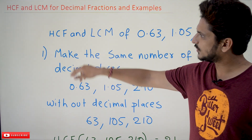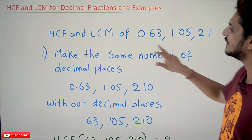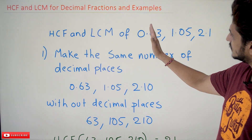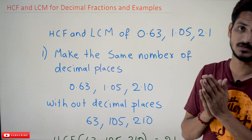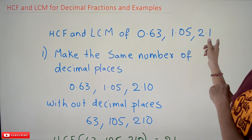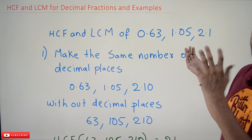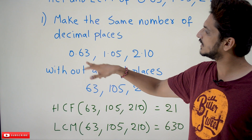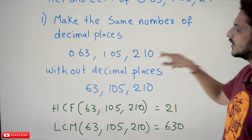The first thing you have to do when decimal fractions are given is make the same number of decimal places — that is, after the dot, make an equal number of decimal places. We have two places, two places, and one place. Add one zero — nothing will happen, the value is not going to change. So we make them equal: 0.63, 1.05, 2.10.